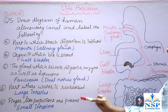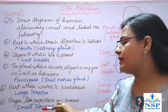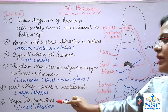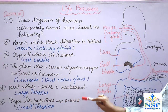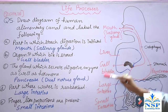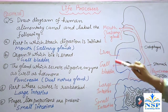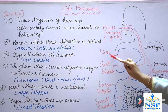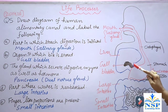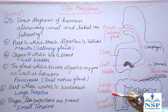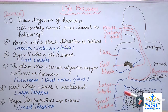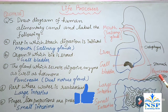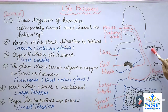Finger-like projections are present in the small intestine, which are called villi, for the absorption of food. This is the diagram of the human alimentary canal: mouth, liver with gallbladder where bile is stored, large intestine where water is reabsorbed, small intestine where finger-like projections are present, pancreas which is dual in nature, stomach, and esophagus.